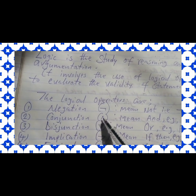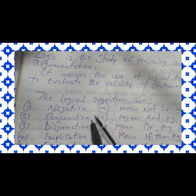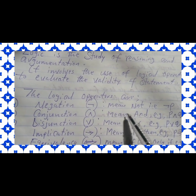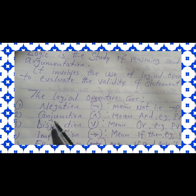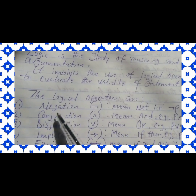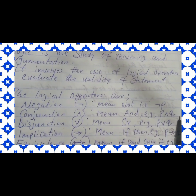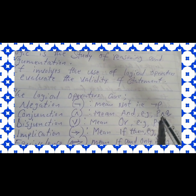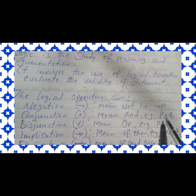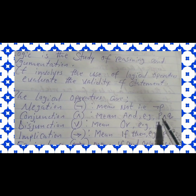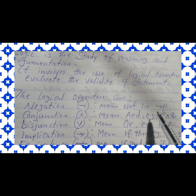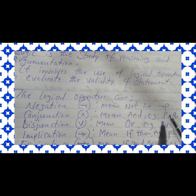Number two, we have the conjunction. This symbol simply means conjunction — it is one of the logical operators and it means 'and.' We call it conjunction, but what this symbol means is 'and.' For example, we see p and q. This symbol means 'and' and it's called conjunction in logic, connecting two things together.